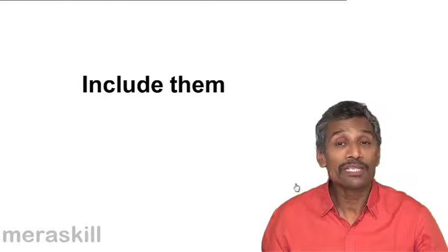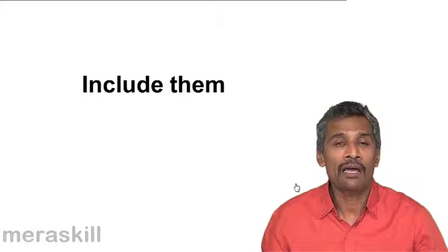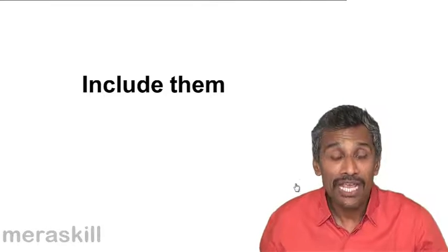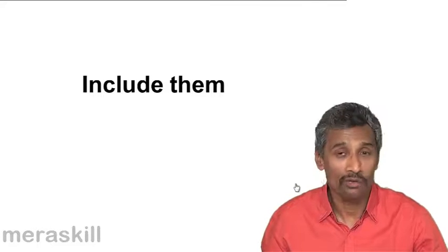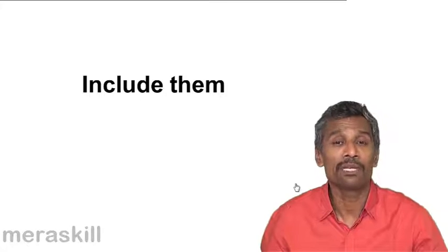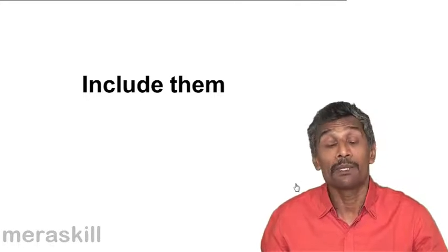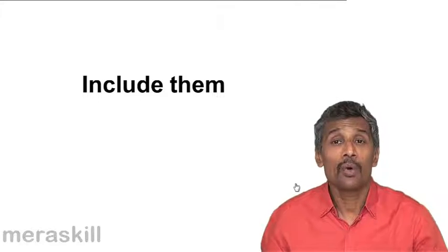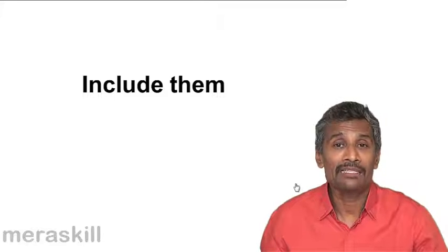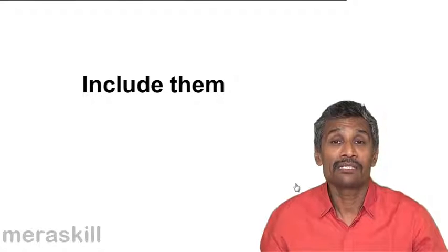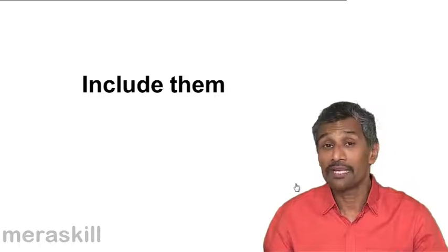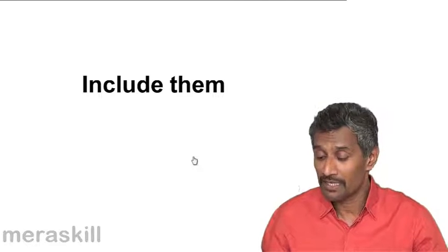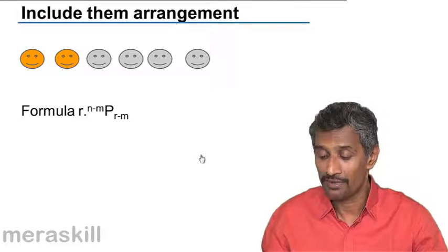We move over to a case wherein you choose R out of N items out of which M is always included or always excluded. So the number of available items is M less. But suppose we need to pick up R at a time out of N such that M is always included — how do we get that kind of a situation? Let's see what we have here.